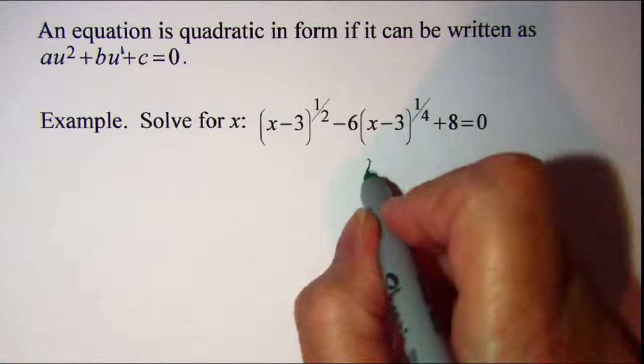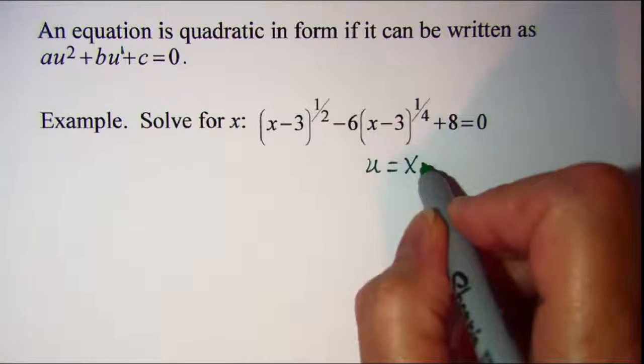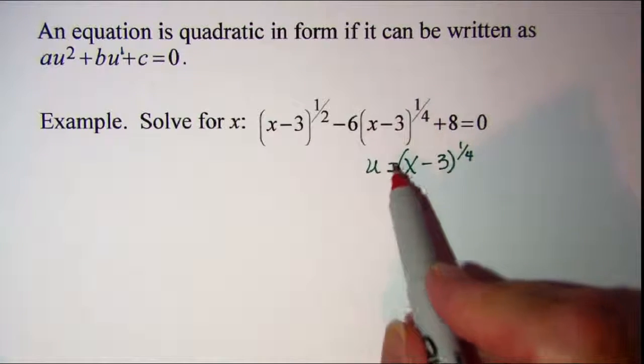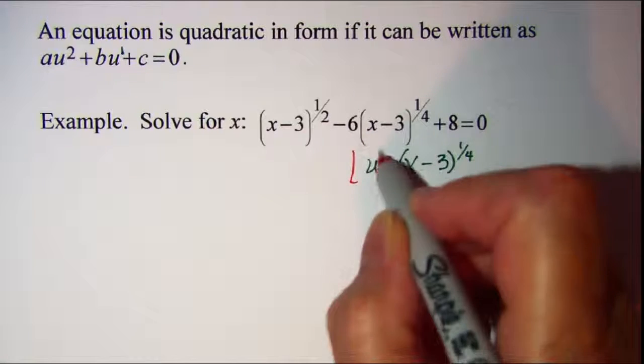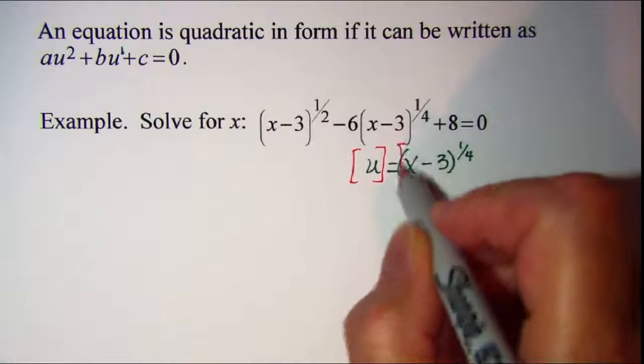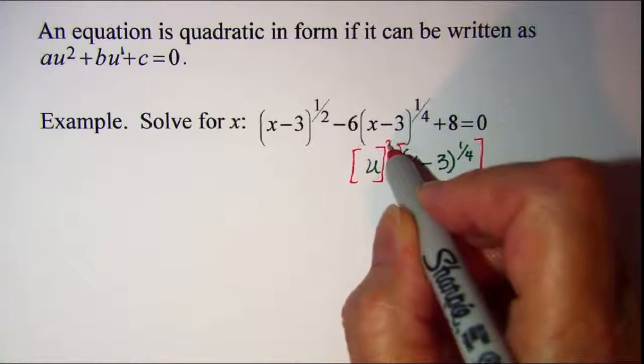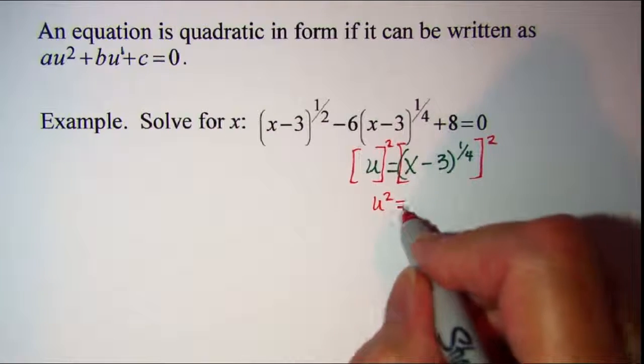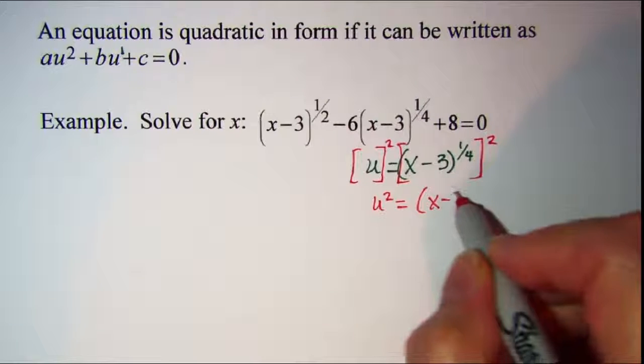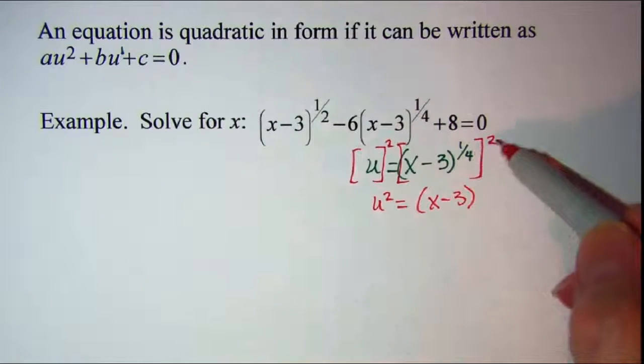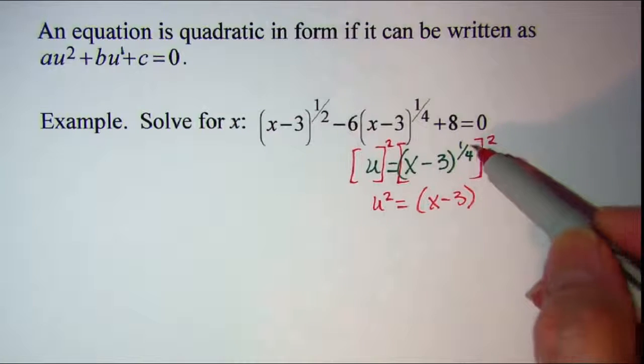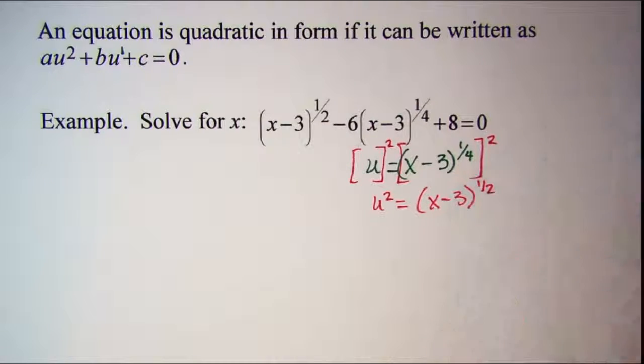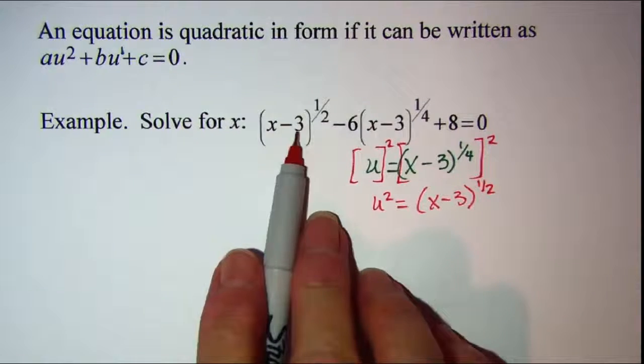So we have u equals x minus three to the one-fourth power. Now we should be able to square both sides of this. And we'll get u squared equals the quantity x minus three to the, whenever you have a power to a power you multiply those exponents, so one-fourth times two over one is one-half. And we do indeed have x minus three to the one-half here.